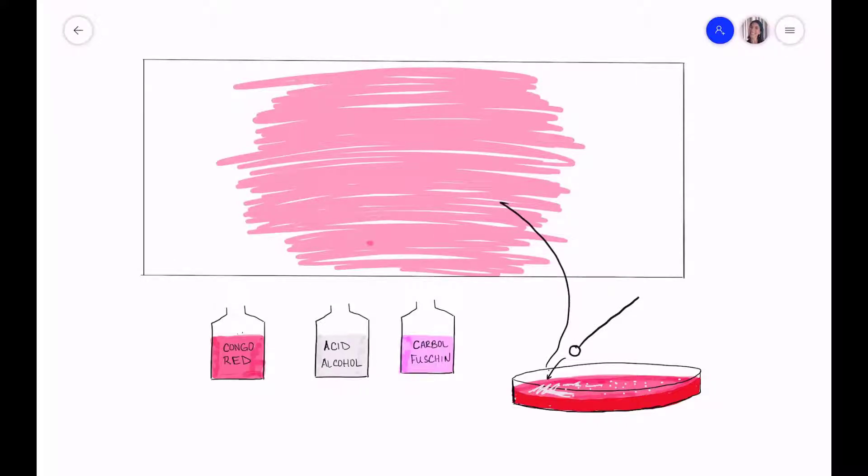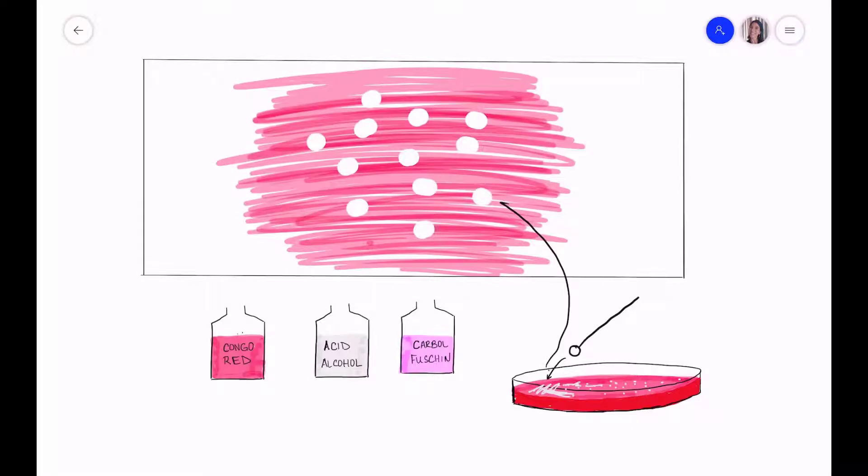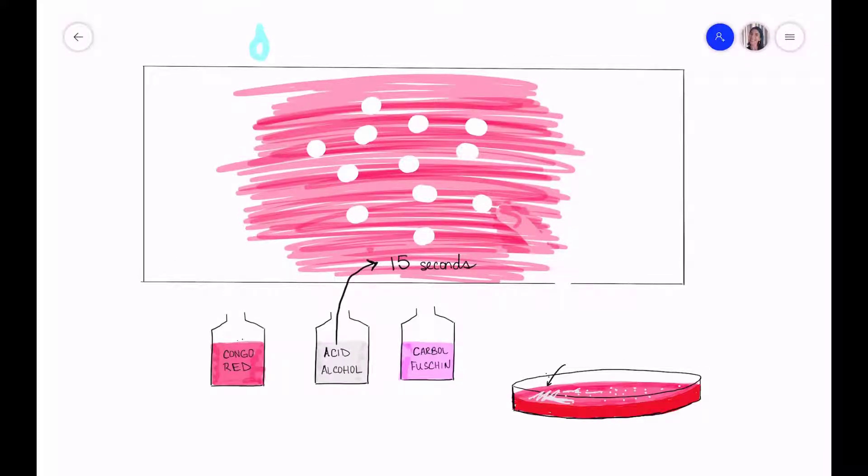If you were to look at the slide under a microscope at this point what you would see are white spaces where all the bacteria and their capsules are. So the next thing that we're going to do is add acid alcohol to the slide to fix it. What this does is create a tighter bond between the Congo Red, the cells, and the glass to kind of keep everything in its place. Once acid alcohol has sat on the slide for 15 seconds we can rinse it all off with water.